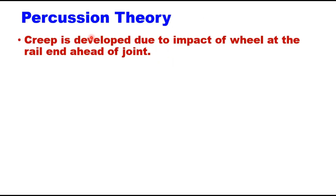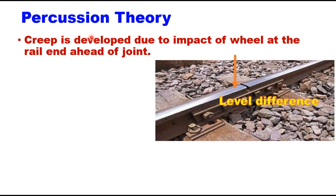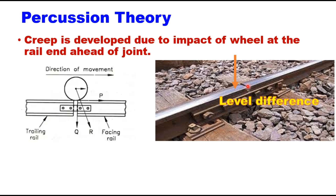The second theory is percussion theory. This theory says that creep is developed due to the impact of wheels at the rail ahead of the joint. When the wheel comes on a rail, the rail gets deflected and there is a level difference between the two rails. When the wheel jumps from one rail to the next over the gap, it strikes at the edge of the forward rail. This force of strike is at some angle — the vertical component tries to batter the rail end down, and the forward component tries to push the rail in the forward direction, causing creep.